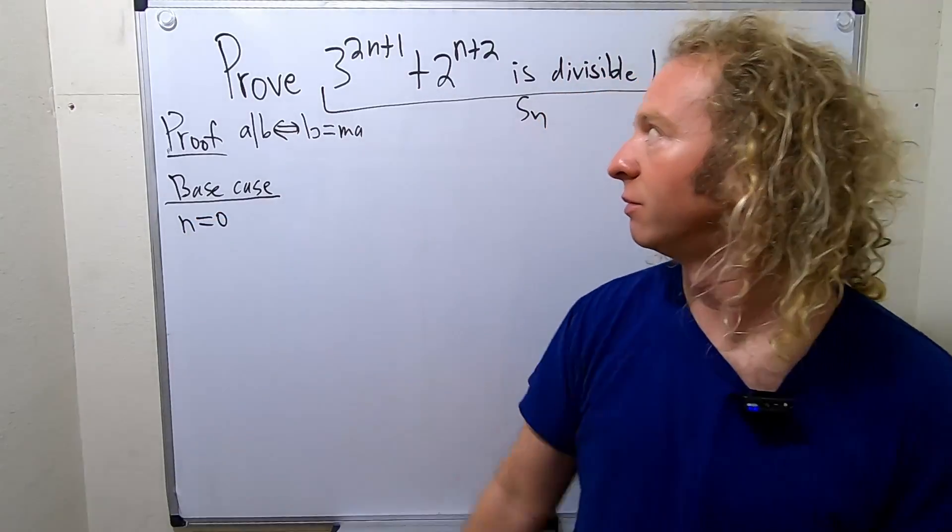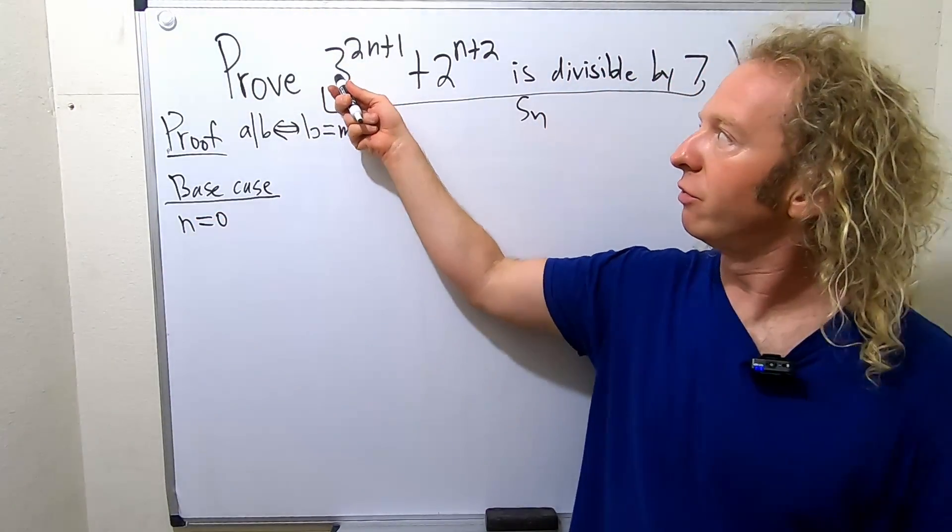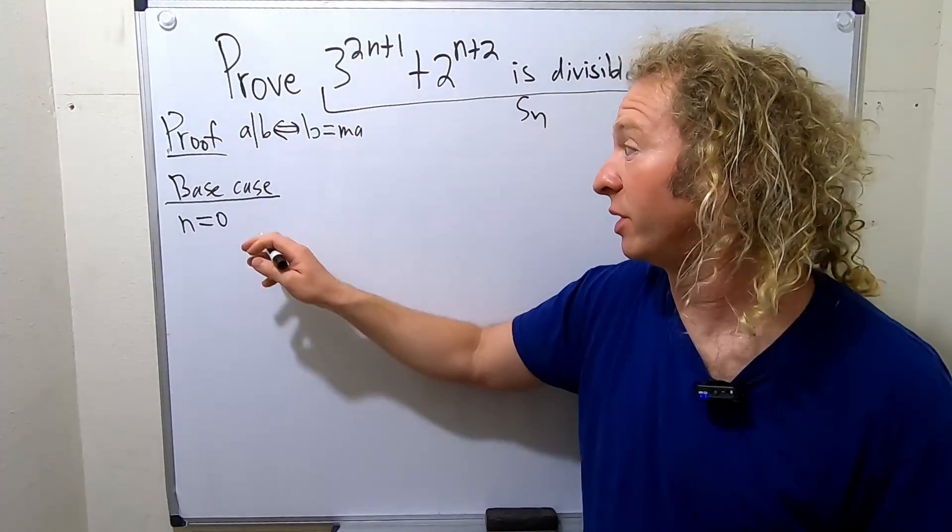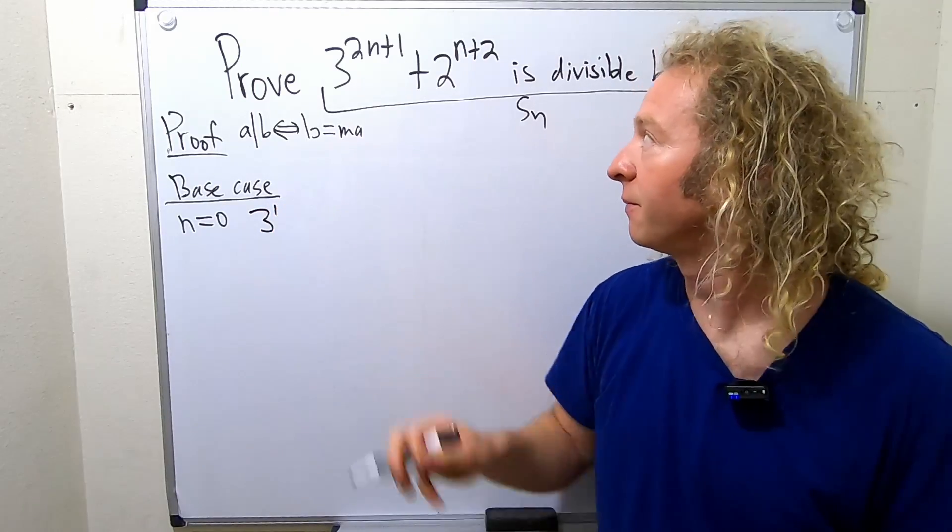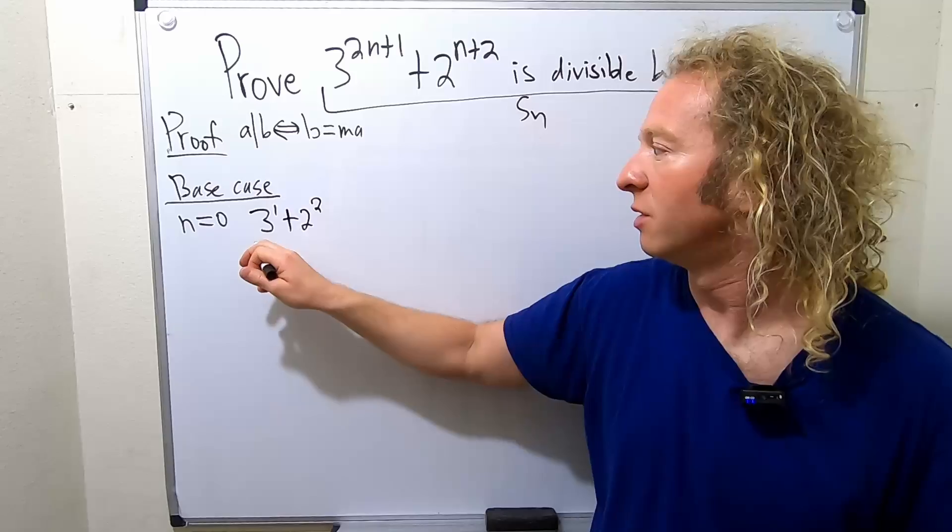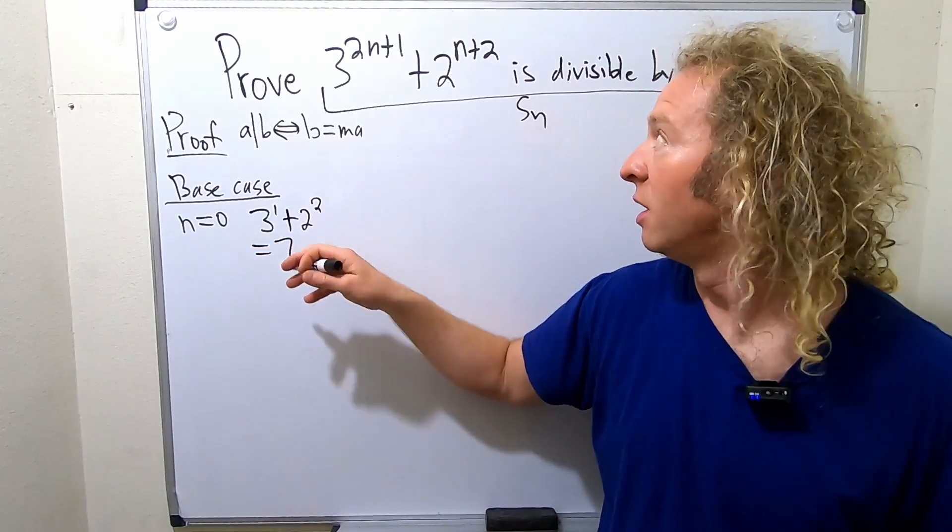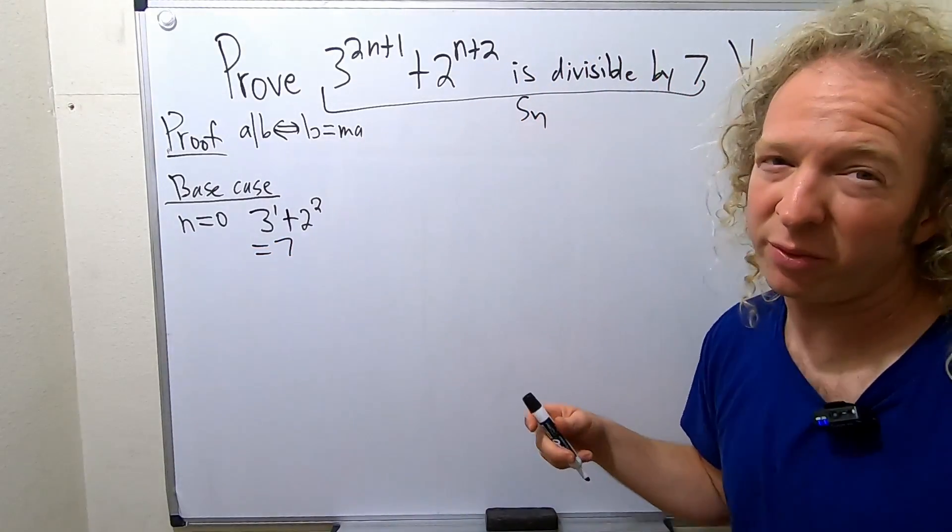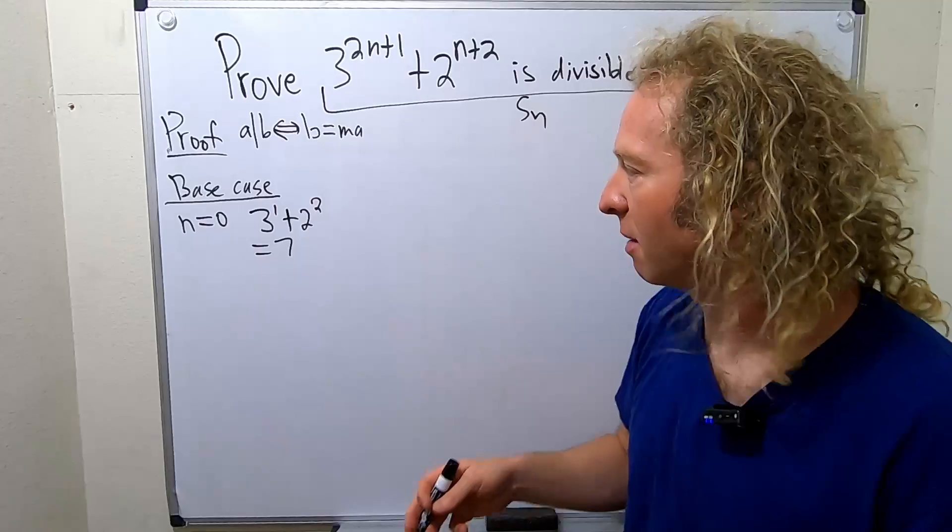We have 3 to the 0 plus 1, so that's just 3 to the 1, plus 2 to the 0 plus 2, so that's just 2 to the 2, so that's equal to 7. And that's clearly divisible by 7, right? 7 does divide 7. It's obvious.